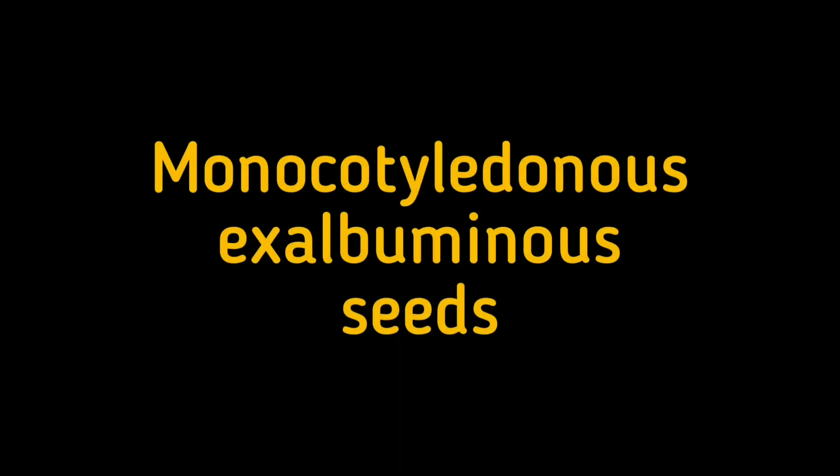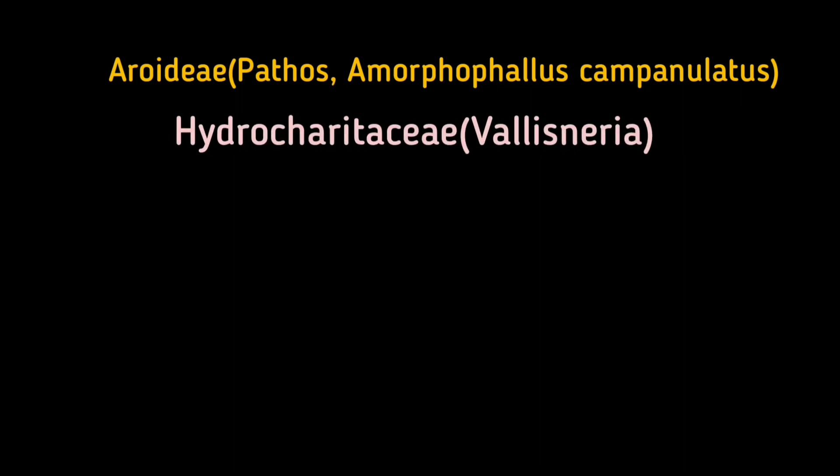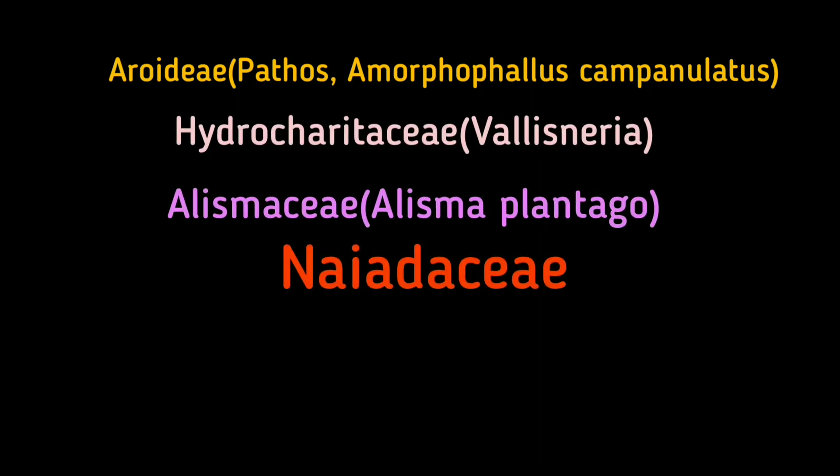Although all the common monocotyledonous seeds are albuminous, there are a few of the ex-albuminous type. This type of seed is found in the families Araceae and Hydrocharitaceae, Alismataceae, Najadaceae, etc. The seed of Alisma shows a curved embryo with a radicle and a cotyledon.